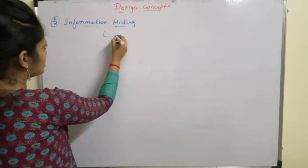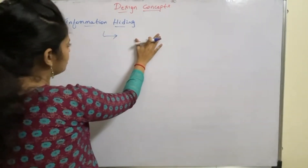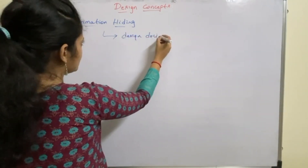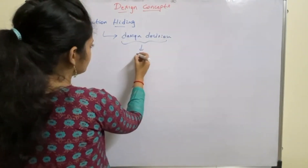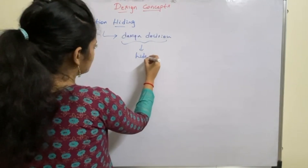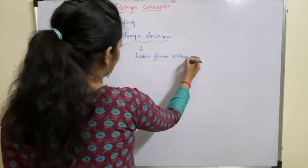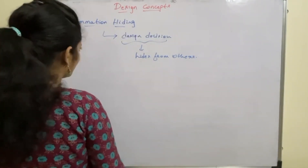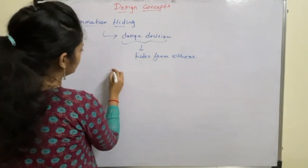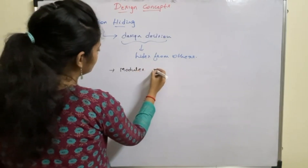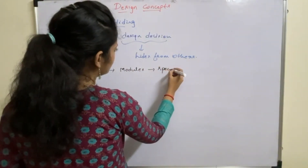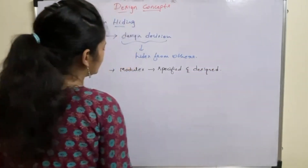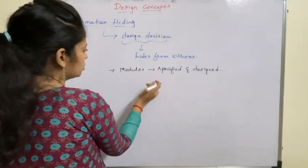The fifth principle is information hiding. The principle of information hiding suggests that modules can be characterized by design decisions that each hides from others. Modules should be specified and designed in a way that the information present in one module is hidden from other modules.